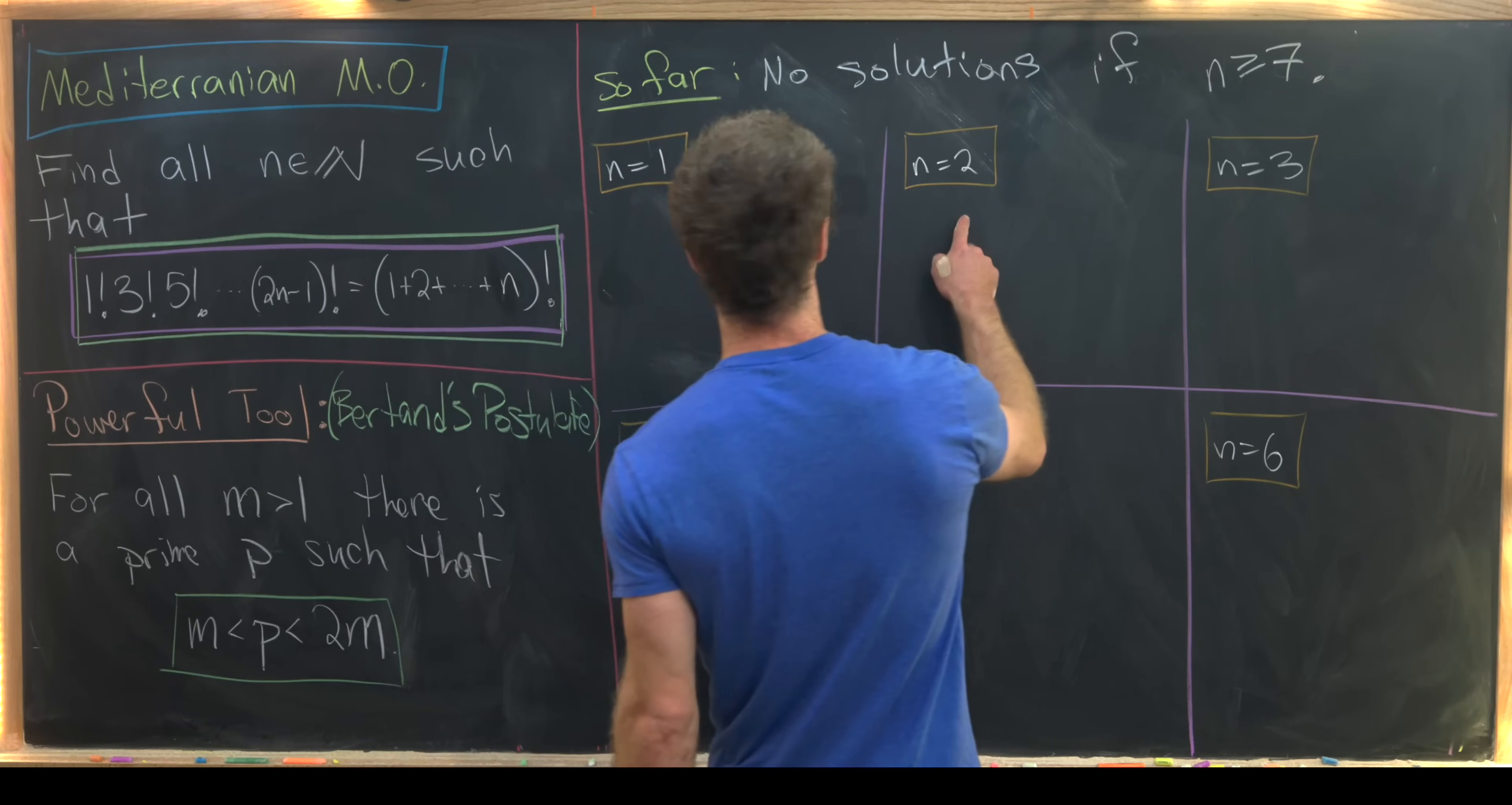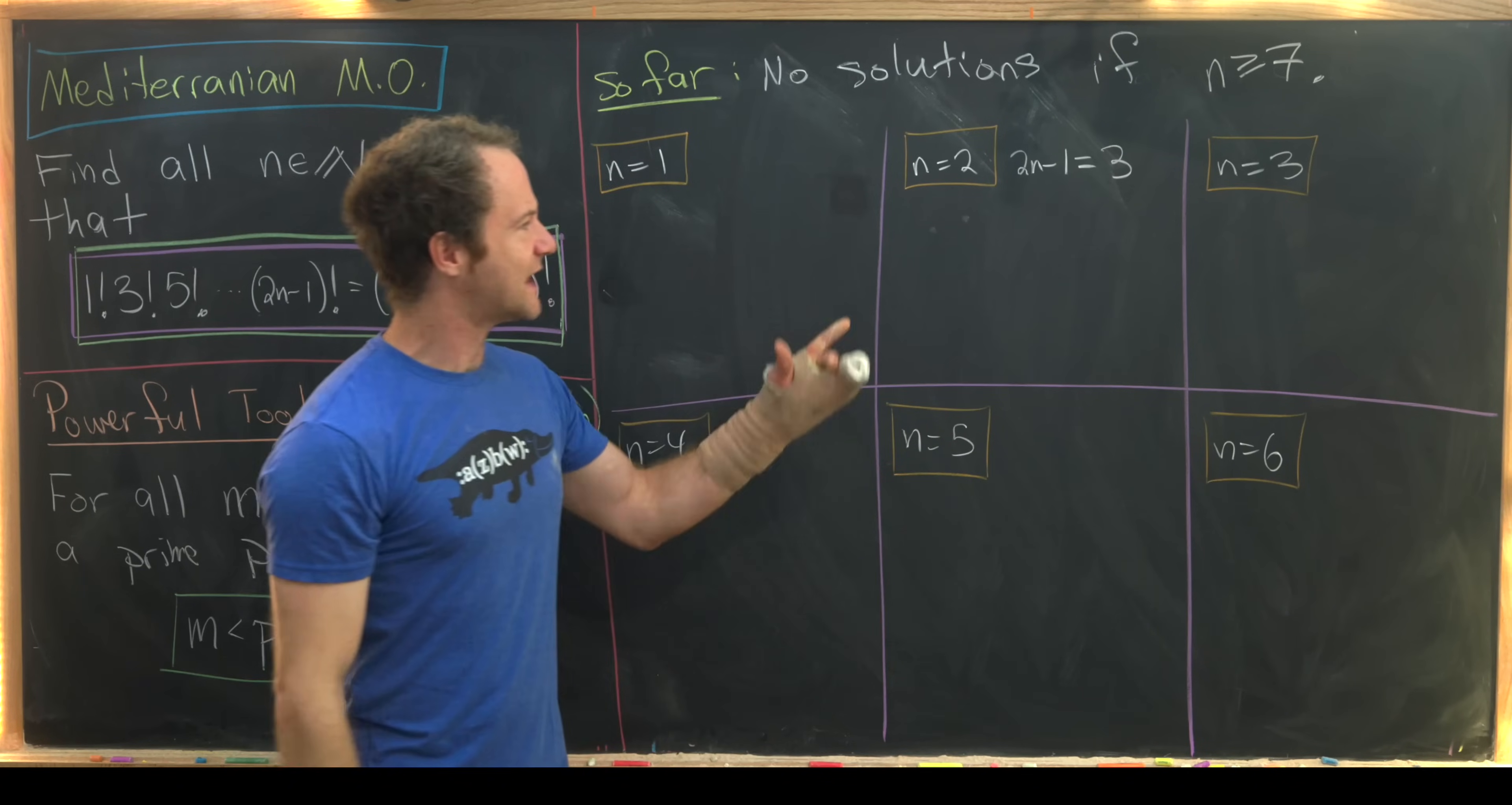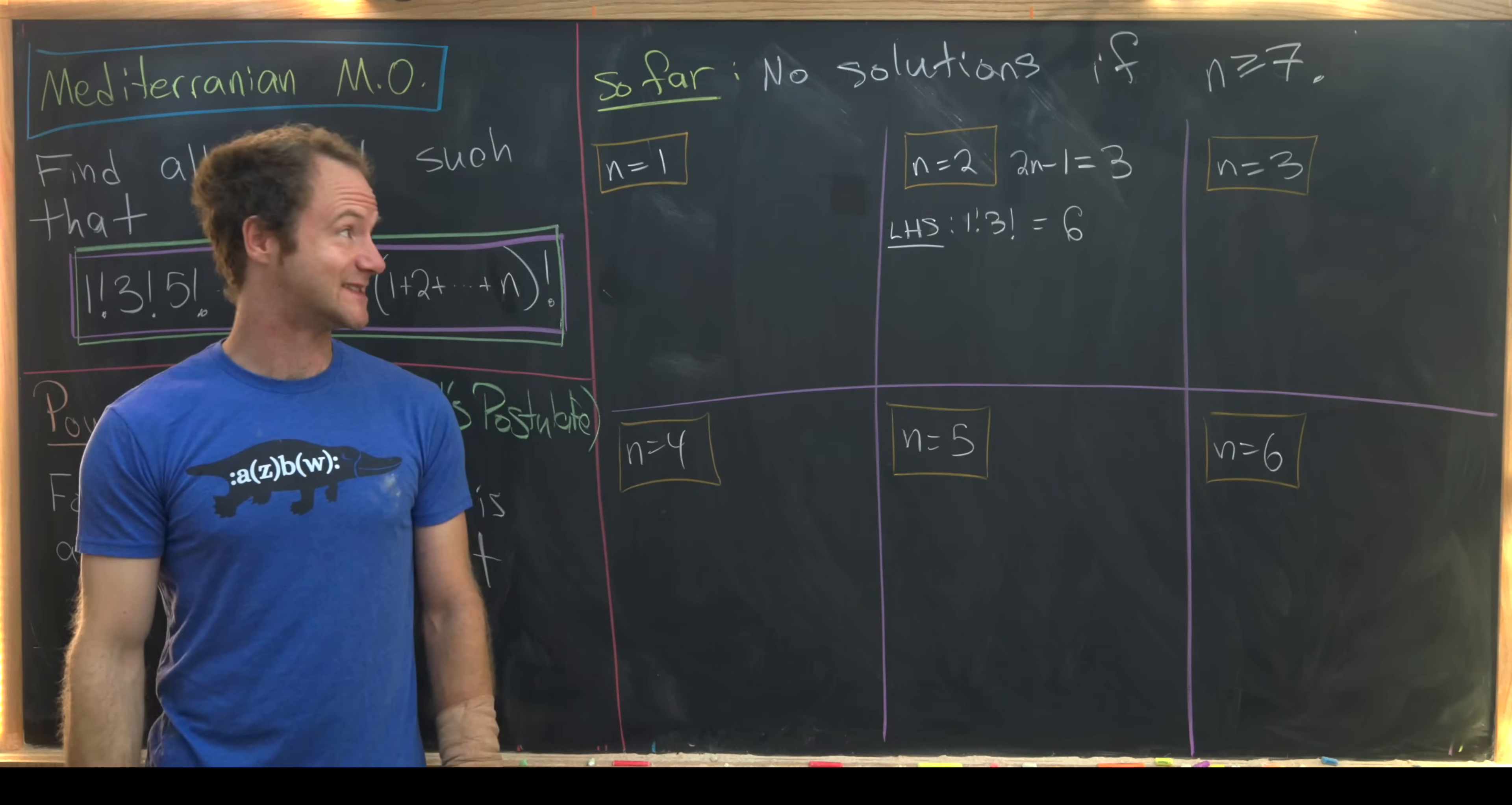Okay, so let's maybe start with n equals 2. Maybe n equals 1 is not super necessary. You guys can easily do that one on your own. So let's see what happens when we have n equals 2. Well, in that case, 2n minus 1 is 2 times 2 minus 1, which is 3. So that's useful to know because our left-hand side goes up to this 2n minus 1 factorial. So let's notice that our left-hand side in this case will be 1 factorial times 3 factorial, but that's just 3 factorial, which is equal to 6.